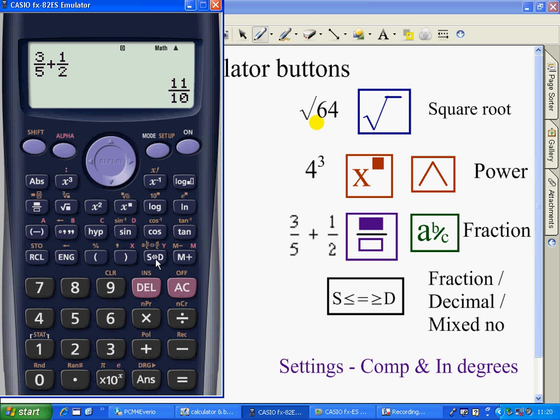If you wanted that, this leads on nicely to the SD button, which changes between fractions, decimals, and mixed numbers. Now, if you look carefully here, I've got, this looks like a mixed number, a whole number with a little fraction, and that is a top-heavy fraction. So, you can change between the two.